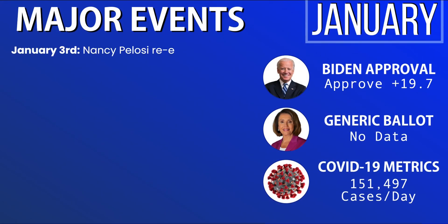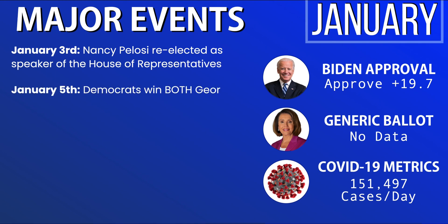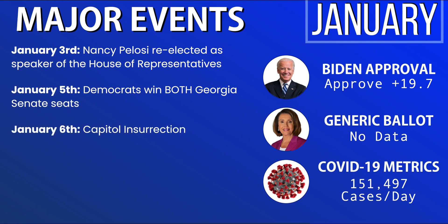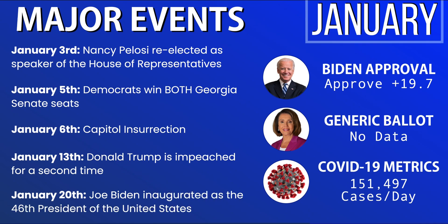In the month of January, on January 3rd, Nancy Pelosi was re-elected as Speaker of the House of Representatives. On the 5th, Democrats won both Georgia Senate seats, flipping them from the Republican Party. On January 6th, the Capitol was stormed — there was an insurrection, and it was one of the most major political events in the past 20 years. On January 13th, Donald Trump was impeached for the second time. On January 20th, Joe Biden was inaugurated as the 46th President of the United States.